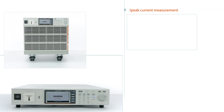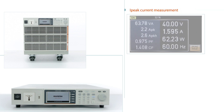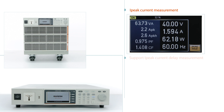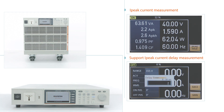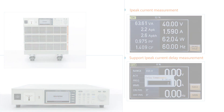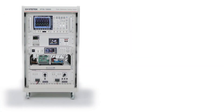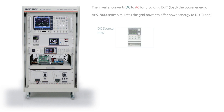IPEG current measurement is for measuring transient inrush current as soon as the equipment power is on, which is usually done by oscilloscope and current probe. IPEG current delay measurement is for measuring transient inrush current after a delay of a specific time.